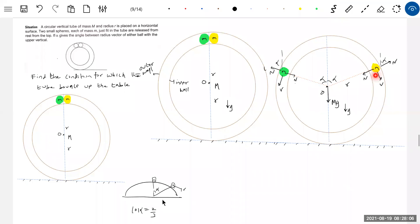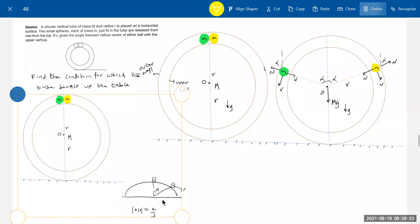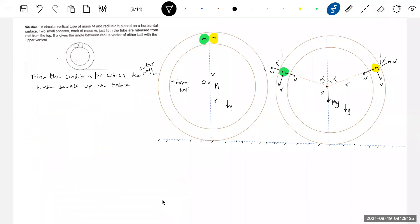When will the tube lose contact? When 2n cos alpha is equal to mg, it will lose contact. Is it okay? Okay, let's write. Let's get into the calculation. I think I will take out this diagram, not needed. We need some space now. Let's get into the concept. This is initially released from rest.